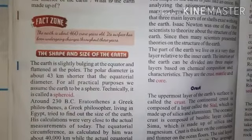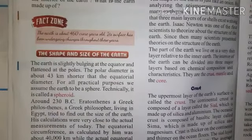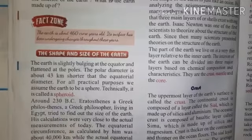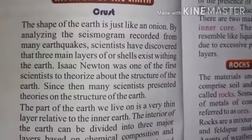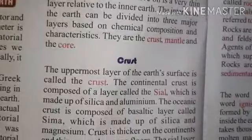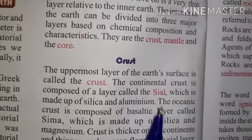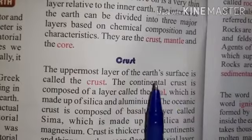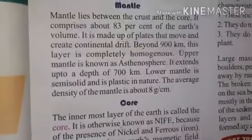The earth is not a complete sphere — it is a spheroid. The interior of the earth is also divided into three basic parts. Number one is the crust, which is the uppermost layer and it is composed of silica and aluminium.